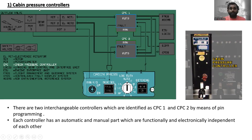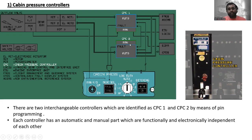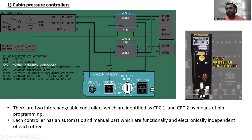Let's go to the first component — the Cabin Pressure Controller. There are two interchangeable controllers identified as CPC1 and CPC2 by means of pin programming. Each controller has an automatic part and a manual part, which are functionally and electronically independent of each other.